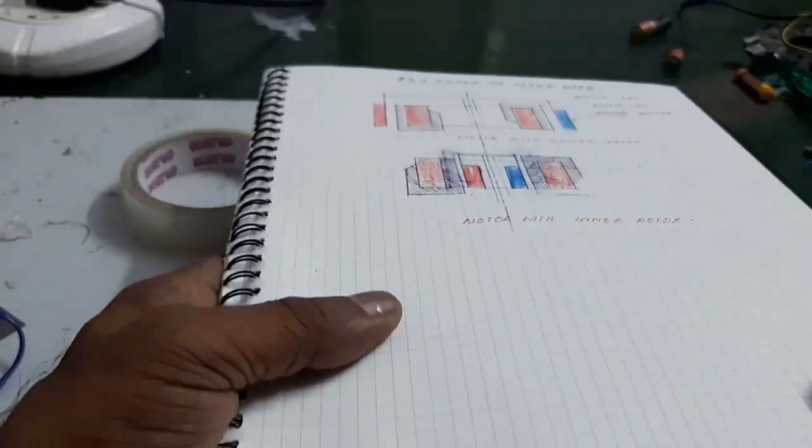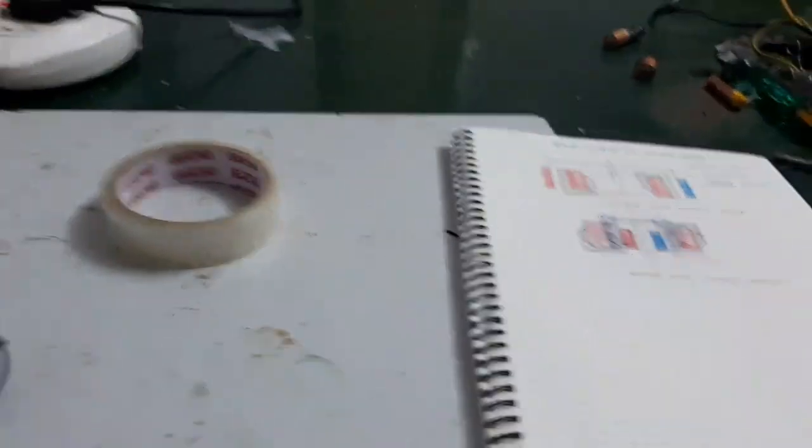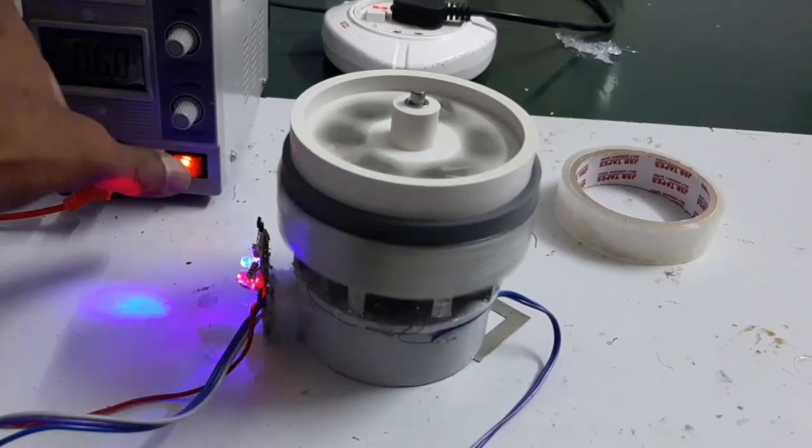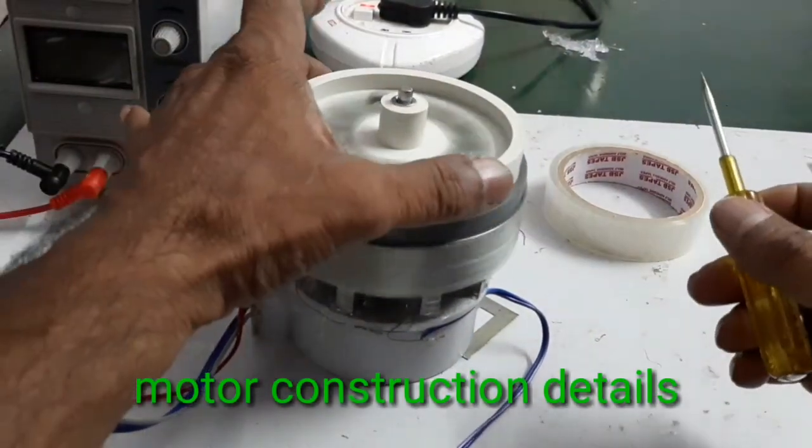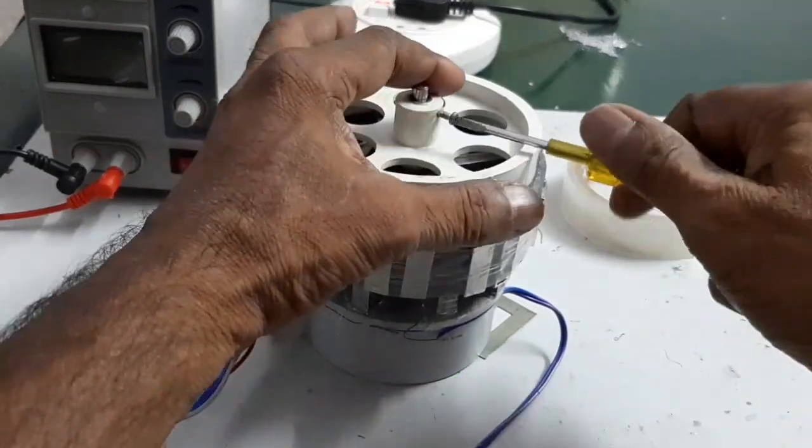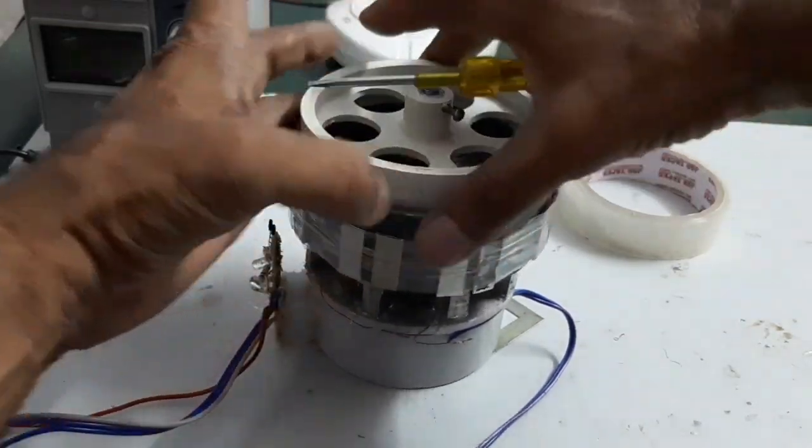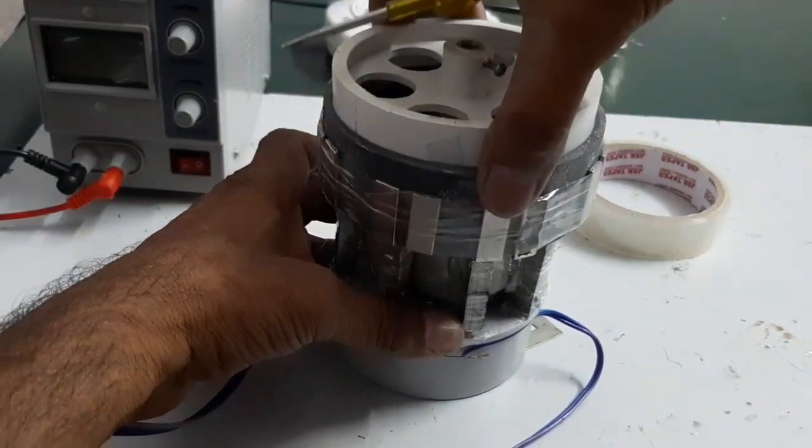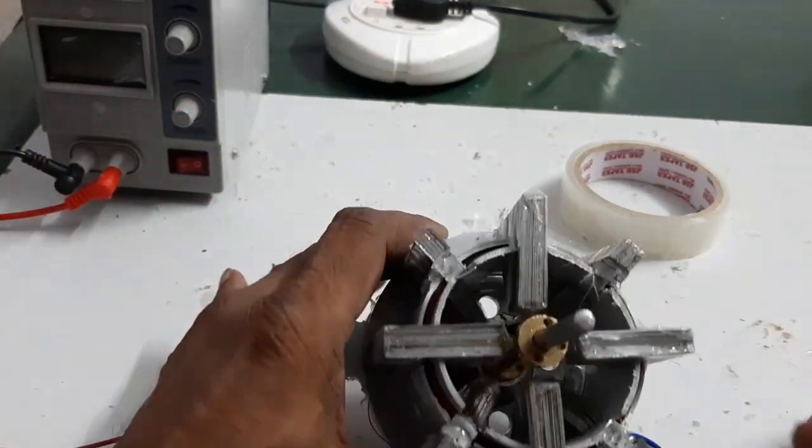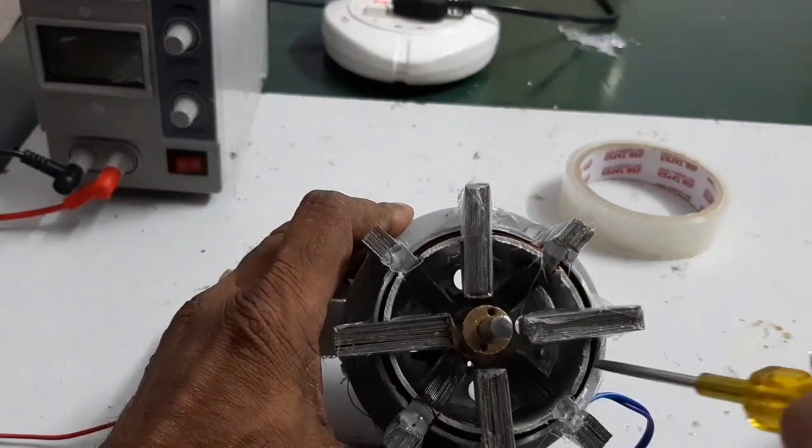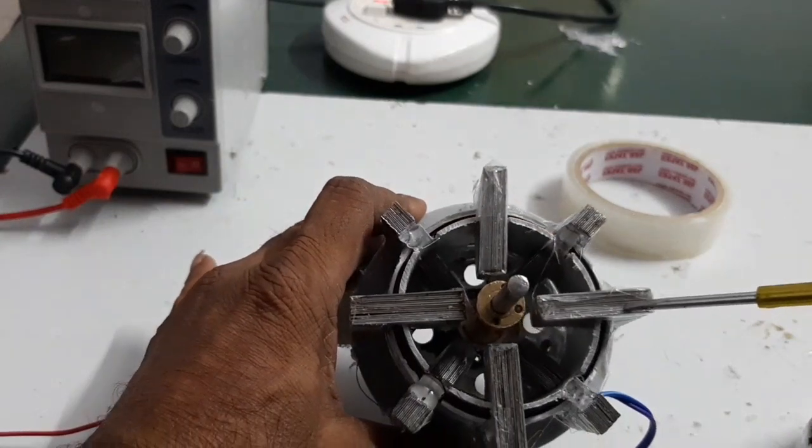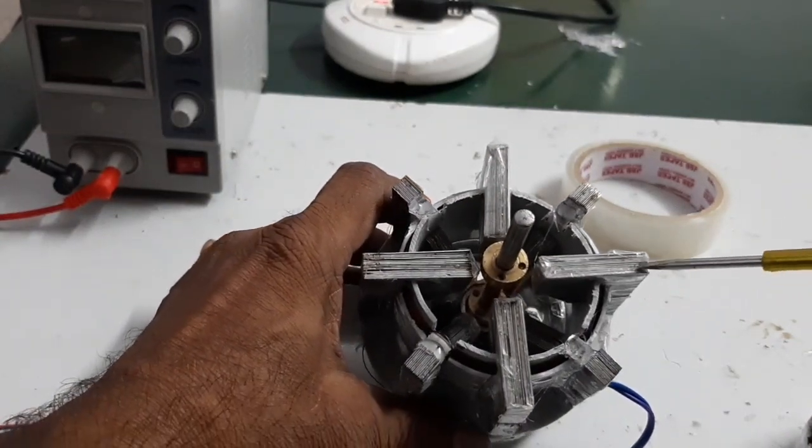Now look at the motor. Here, this is the 8-pole rotor. Look at this - this is the coil. A C-core is inserted from bottom and this is the C-core inserted from the top.